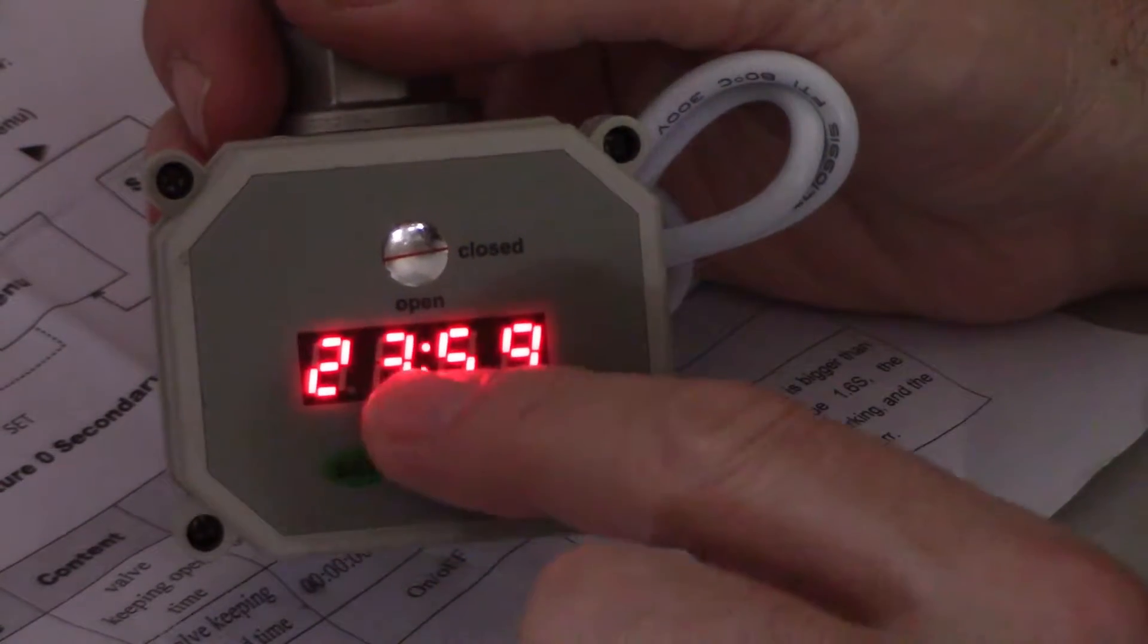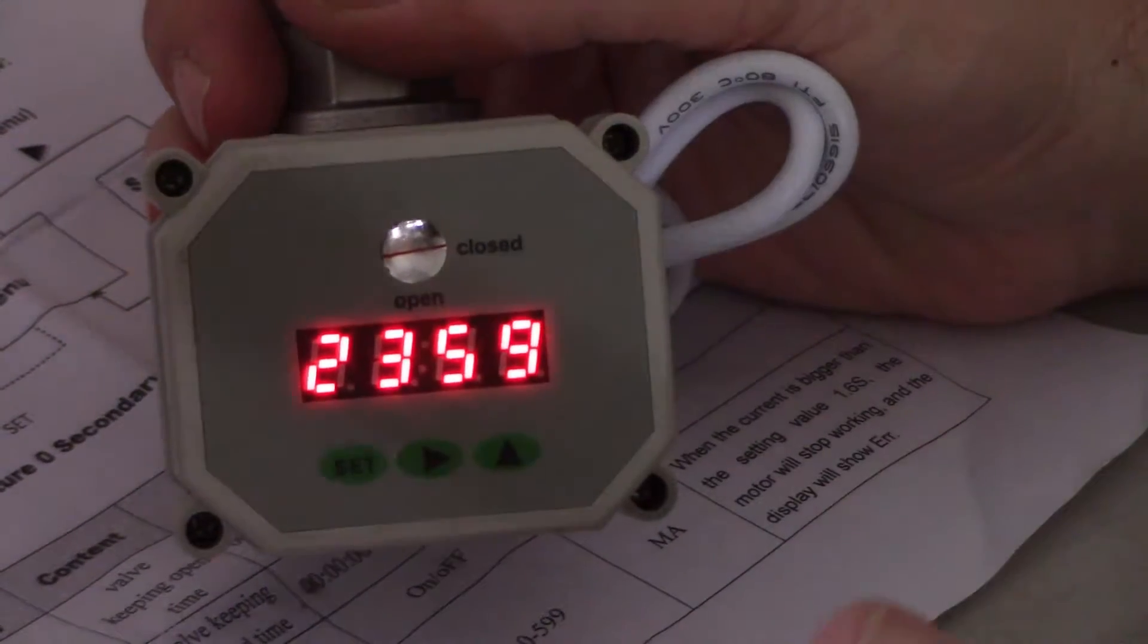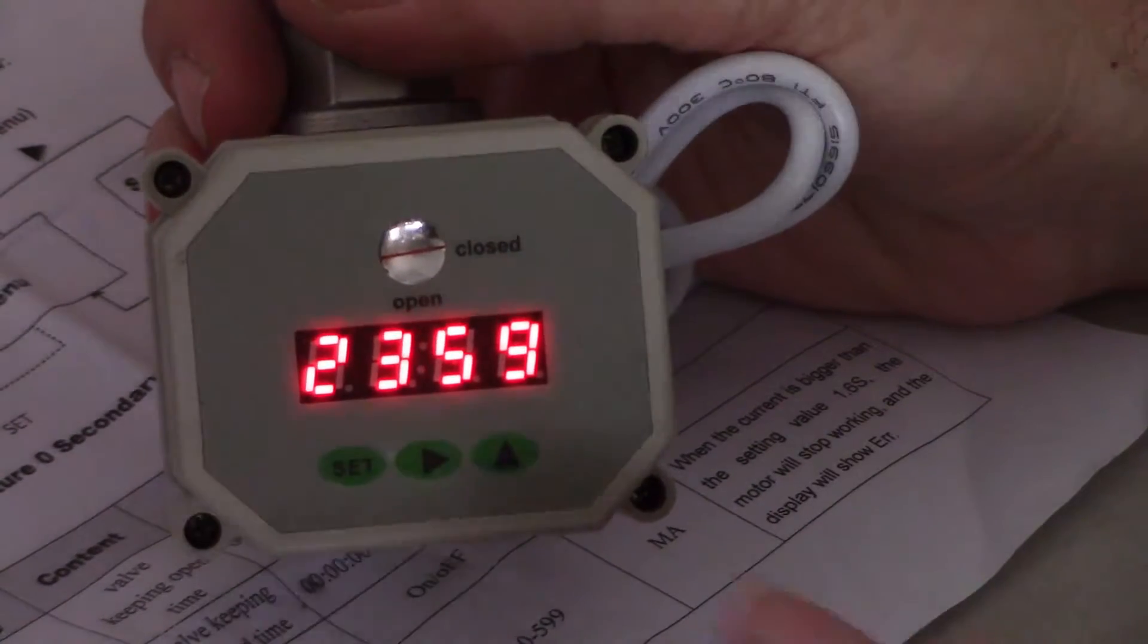Right now I've got 23 hours and 59 minutes, and that's basically we're going to set it to flush once a day for a certain number of seconds.